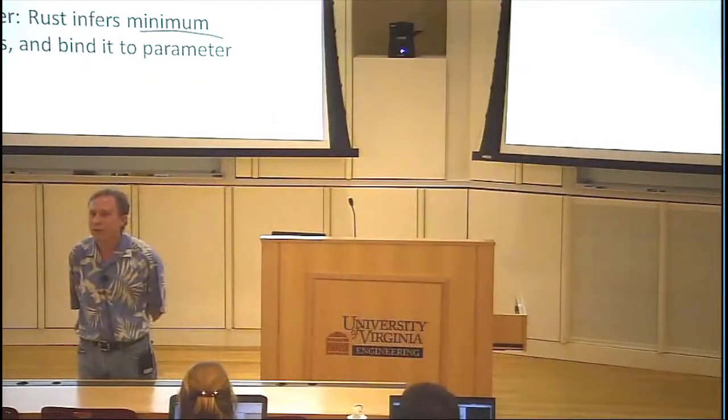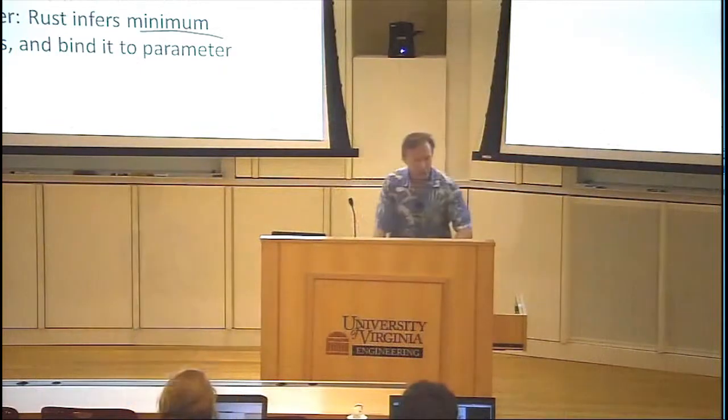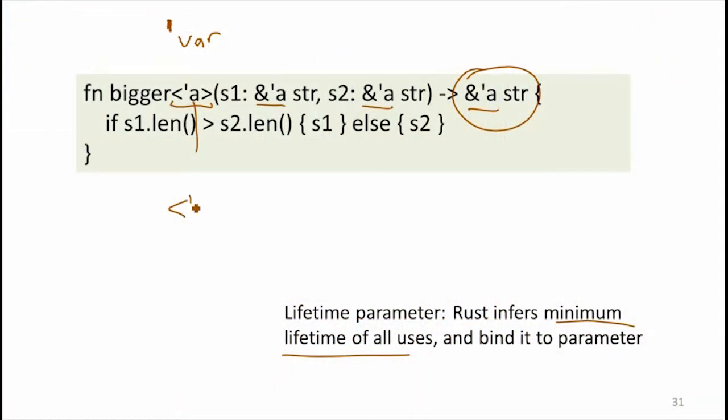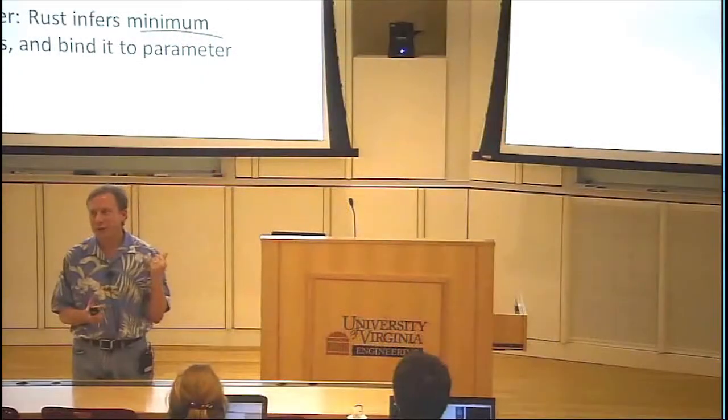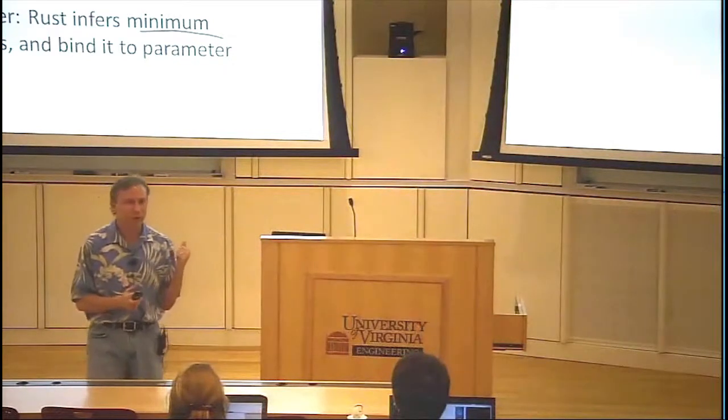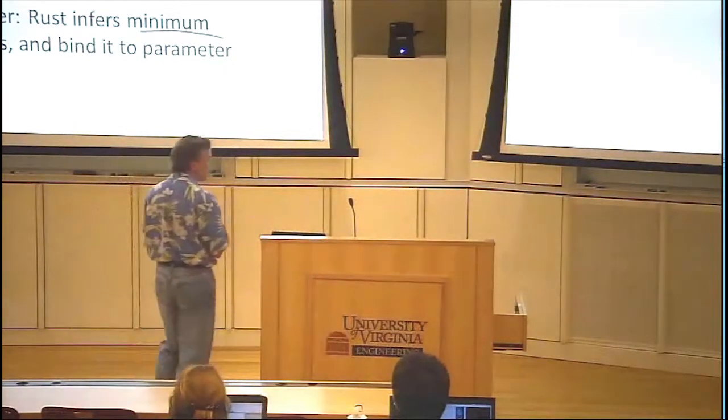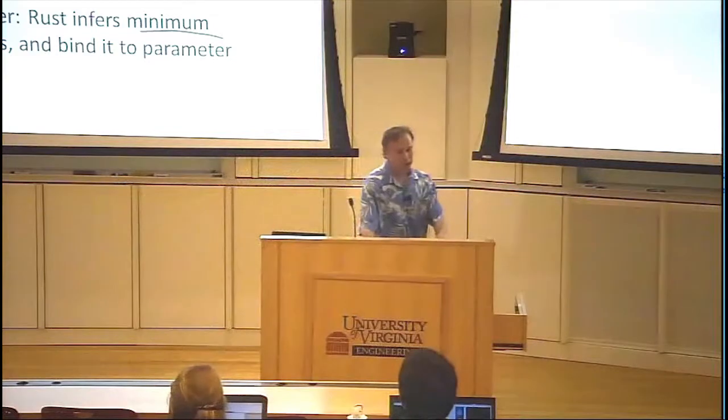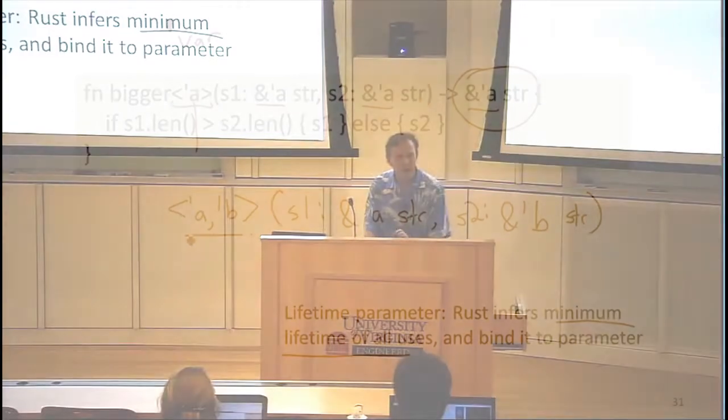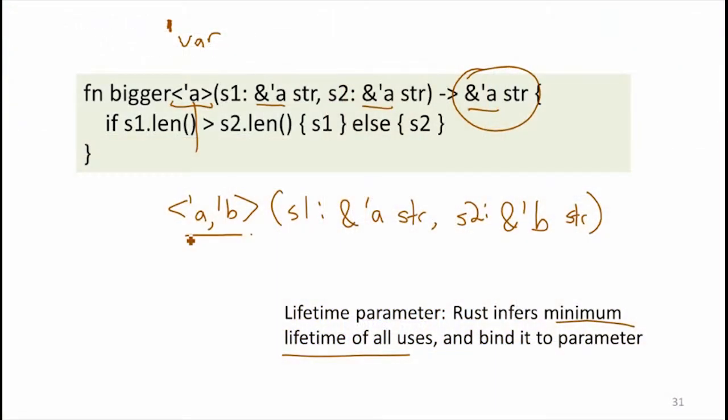So it's used on the inputs. The lifetime that Rust is going to infer for the meaning of this value is the minimum lifetime of all uses of that parameter. So we used the a parameter twice in parameters. That means the meaning of the lifetime a in this type is the minimum lifetime that's passed in of those two parameters. That means the lifetime of the result is that same lifetime. So does this make sense? Can we have more than one lifetime? Yeah, so we could have multiple variables here. We could have two lifetime parameters.